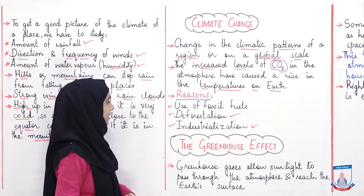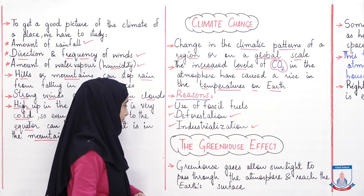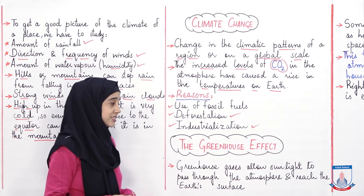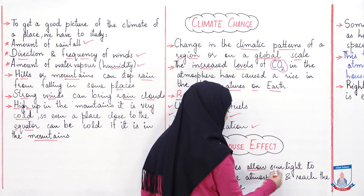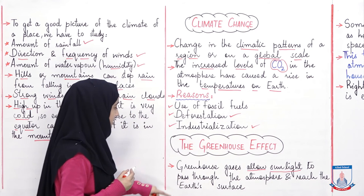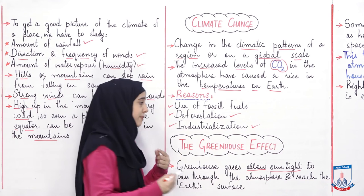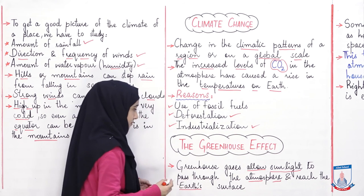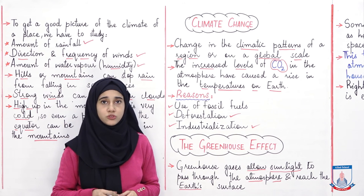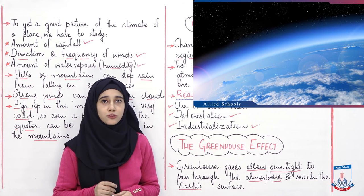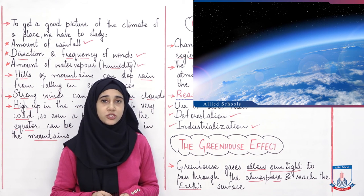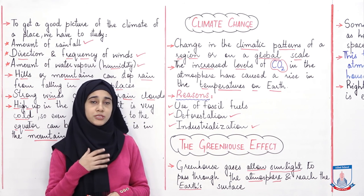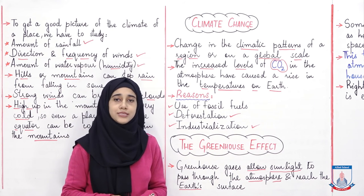Now let's talk about the greenhouse effect. Greenhouse gases allow sunlight to pass through the atmosphere and reach the earth's surface. The atmosphere is a circle of gases around our earth. Greenhouse gases allow sunlight to pass through the atmosphere and reach the earth's surface.